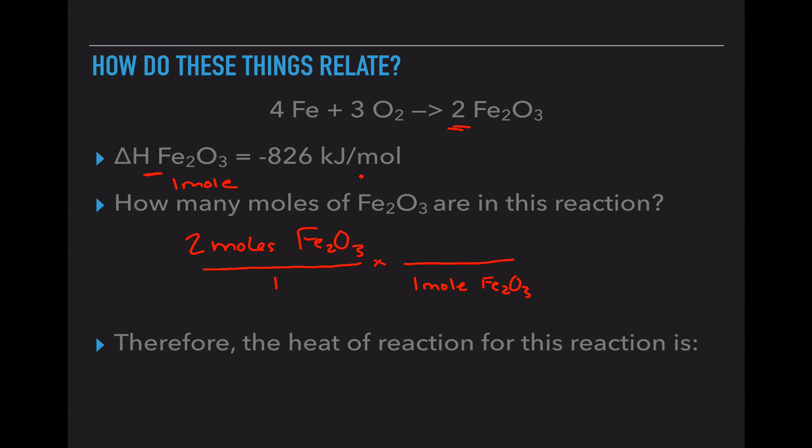And essentially, kilojoules per mole means per one mole of iron oxide. And it's negative 826 kilojoules on the top. When we do that, the moles of iron oxide cancel and we're left only with kilojoules on the top. So our heat of reaction or our delta H of iron oxide for this reaction is equal to negative 1652 kilojoules.